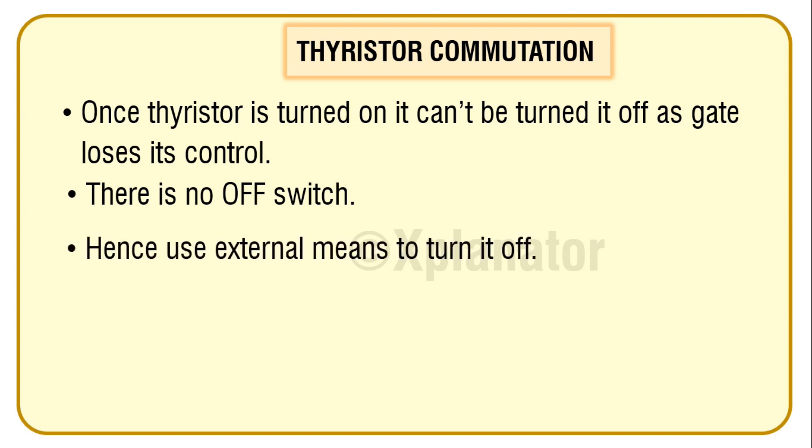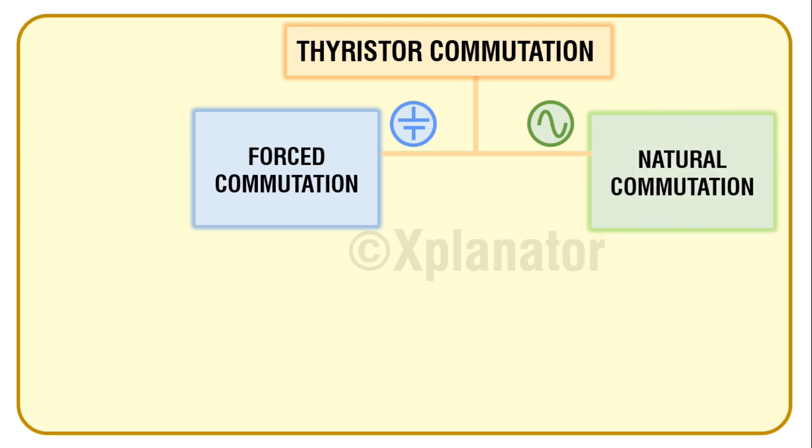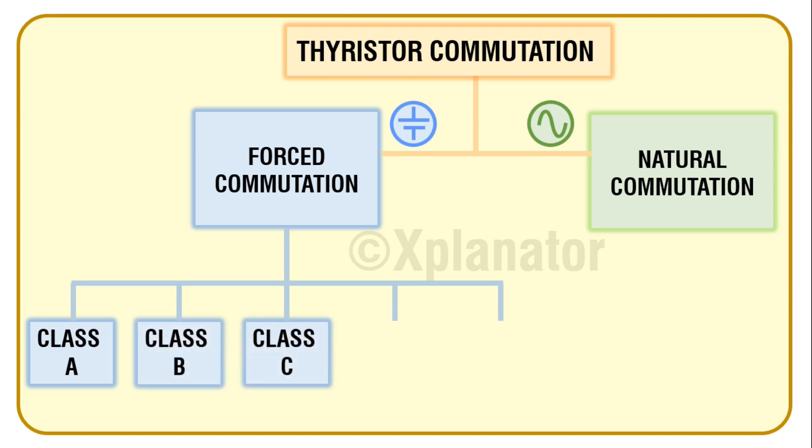Basically, there are two broad classifications based on the type of power supply used. If you use DC supply, it's called forced commutation. If you use AC supply, it's called natural commutation. Under forced commutation, there are five types: Class A, Class B, Class C, Class D, and Class E. Under natural commutation, there comes Class F.